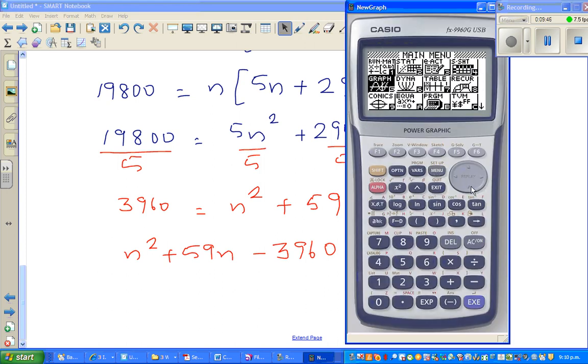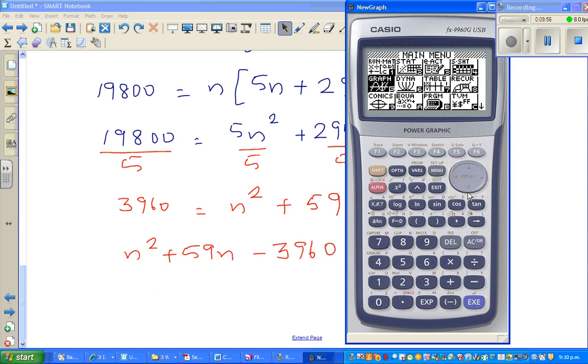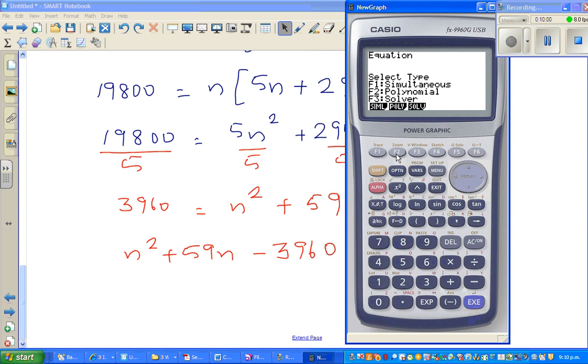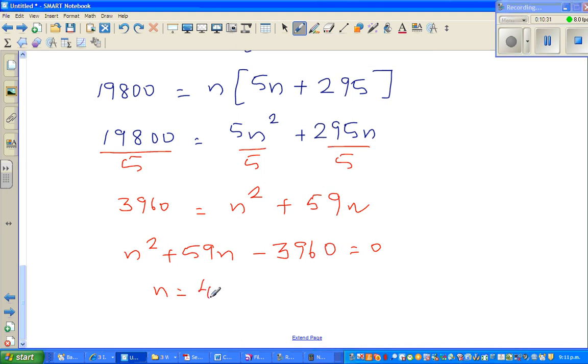You can use a calculator, go to menu, then equation, polynomial, second degree. Your a is the coefficient of n squared which is 1, b is the coefficient of n which is 59, and c is the constant which is minus 3960. Solve it. So n equals 40 or n equals minus 99.